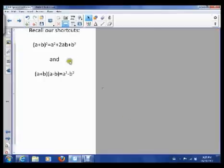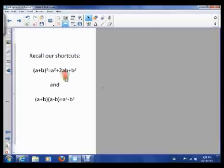I want you to recall our shortcuts. So our shortcuts were, if we had a plus b squared, we expanded that to be a squared plus 2ab plus b squared. And the other one was difference of squares, where if we had a plus b times a minus b, that expanded to a squared minus b squared.